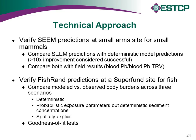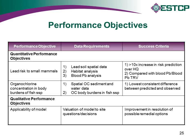Our approach was straightforward. Based on the earlier bird work for SEAM, we did the same thing except using small mammals, since they're typically of concern at many sites — at least at two different sites. For FishRand we did the same at Superfund sites. For small mammals, we used blood lead analysis and compared those blood lead data to blood lead TRVs from the literature. For FishRand, we looked at organochlorine concentrations in body burdens of different fish species at two sites and compared to model output. We defined success as being better than an order of magnitude difference — a factor of 10.